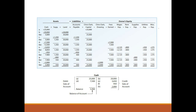Recording transactions in accounts must follow certain rules. For example, increases in assets are recorded on the debit or left side of an account. Likewise, decreases in assets are recorded on the credit right side of an account. The excess of the debits of an asset account over its credits is the balance of the account. The balance of the cash account is inserted in the account in the debit column, and in this way the balance is identified as a debit balance.